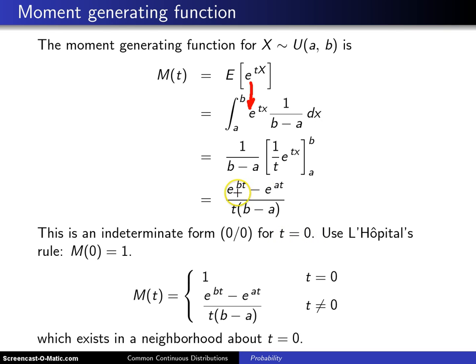If you plug t equals 0 into the numerator, you get a 0. When you plug t equals 0 into the denominator, you also get a 0. So when you use L'Hopital's rule,